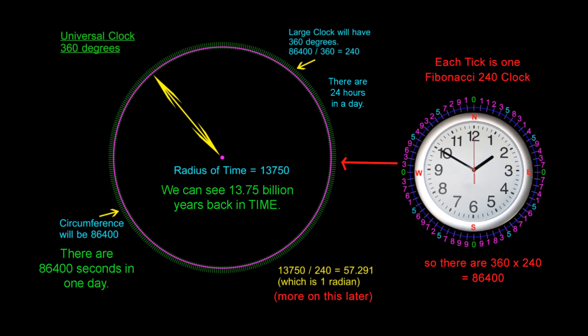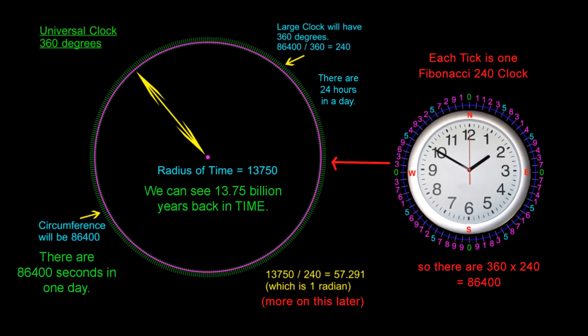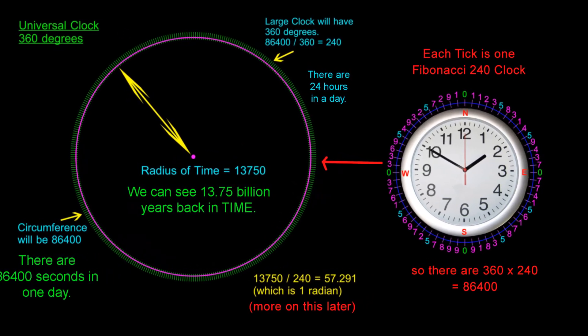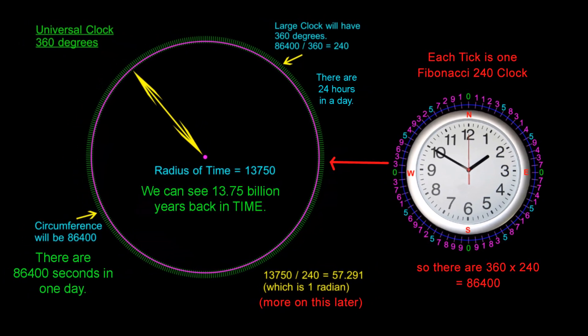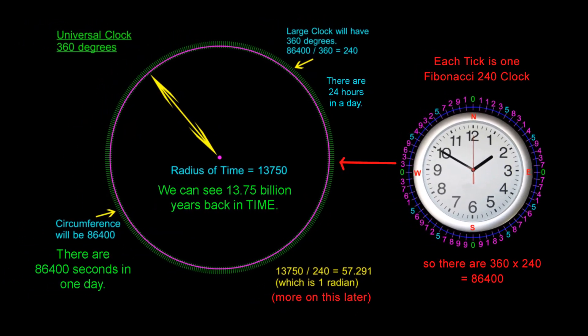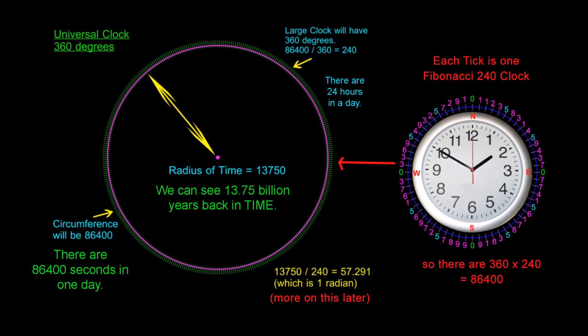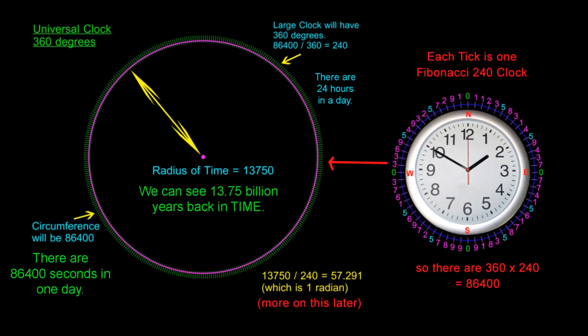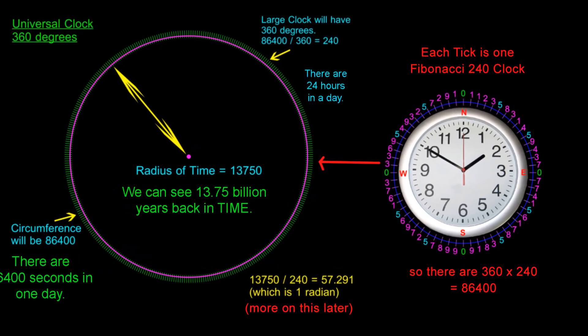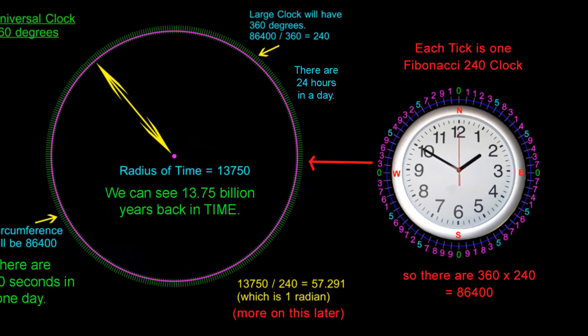Now, look at this. Do you know what the radius of a circle is if its diameter is 86,400? The radius will be 13,750. Incredible. The radius of this circle created from a mixture of time and space produced by the Fibonacci 60-digit clock is 13,750.